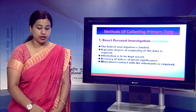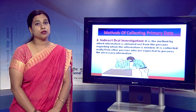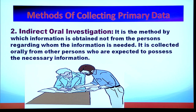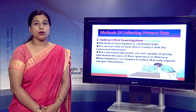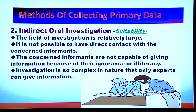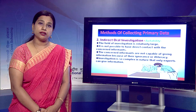The second method is indirect oral investigation. Under this method, the information is obtained by the investigator not from the person directly but from some other person who possesses such information. We use this method when the field of investigation is too large, direct contact with the informant is not possible, the concerned informant is not capable of giving information, or the investigation is so complex that only experts can provide information.